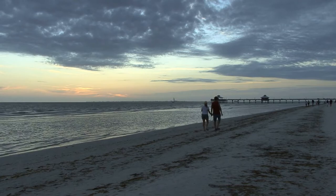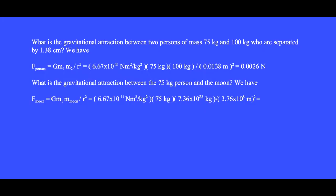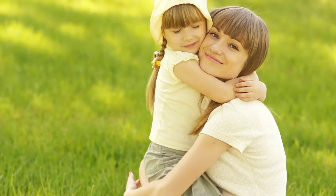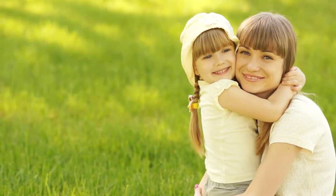What is the gravitational attraction between two persons? One has a mass of 75 kilograms and the other 100 kilograms. When they are separated by 1.38 centimeters, the force on a person is 0.0026 newtons. This is still a very tiny force. In comparison, the gravitational attraction between the 75 kilogram person and the moon gives the same result: 0.0026 newtons. The force is the same in both situations. This means that when you hug your favorite person, you must hold tight, or the moon will pull that person away from you.